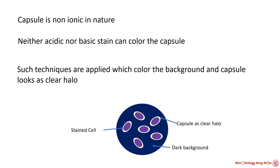The principle behind capsule staining: bacterial capsules are non-ionic, so neither acidic nor basic stains will adhere to their surfaces. Therefore the best way to visualize them is to stain the background using an acidic stain like nigrosine or congo red, and to stain the cell itself using a basic stain like crystal violet, safranin, basic fuchsin, or methylene blue. In this case the capsule looks as a colorless halo. To understand negative and positive staining, please watch the video — link is displayed above and in the description box below.